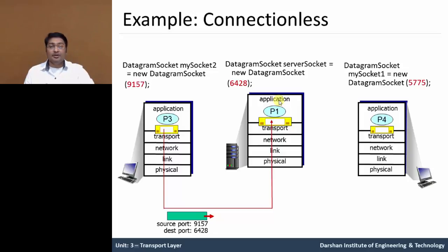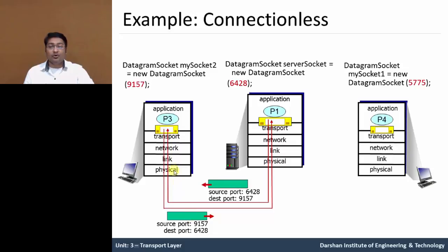The UDP segment is fully identified by a two-tuple: first, the destination IP address, and second, the destination port number. The source port number from host A is used by host B as a return address. A segment passed from host A to host B has source port number 9157 and destination port 6428. It checks the port number — the port number 6428 is appropriate, so it passes to the upper layer.